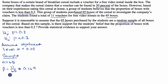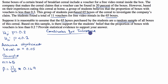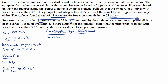The next thing we want to do before we make an inference is to make sure we're meeting the conditions for inference. The first one is random sample — that it is truly a random sample. Here, they tell us it is reasonable to assume that the 65 boxes purchased by the students are a random sample. So that checks that off.